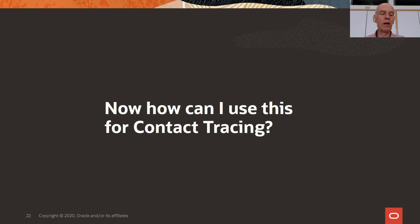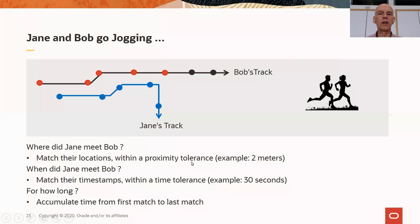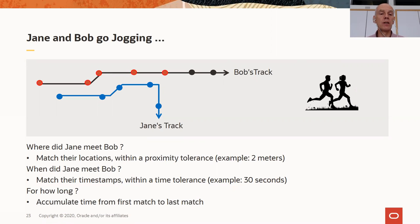Bringing us back to the original question: how can I use this for contact tracing? Imagine we have two people — Jane and Bob — and they go jogging. The question is: where did Jane meet Bob? You need to find all matching locations. If you've worked with GPS data, you know this information is inaccurate — GPS points will hardly ever be in the very same location, so you need a spatial tolerance. For contact tracing, the timestamps will also be inaccurate or out of sync, so you also need a tolerance in time.